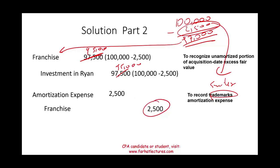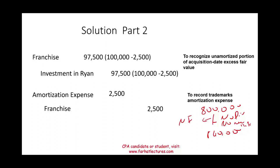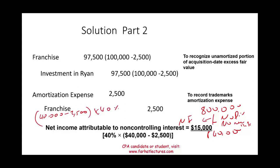Finally, we compute net income attributable to the non-controlling interest. Ryan's book value at the beginning of 20X1 was $800,000 and at year-end was $840,000. With no dividends and no new stock issued, the net income is $40,000. The NCI owns 40%, so: $40,000 × 40% = $16,000, minus the NCI's share of amortization ($2,500 × 40% = $1,000), giving NCI net income of $15,000.